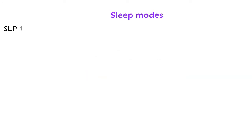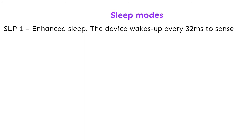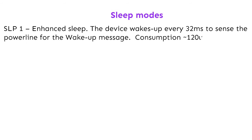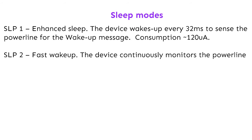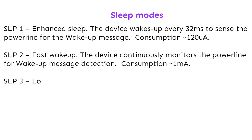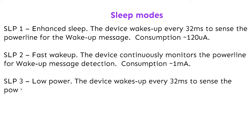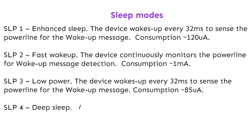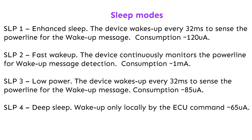The DCAN 500 has 4 sleep modes. Sleep 1, enhanced sleep: the device wakes up every 32 ms to sense the powerline for a wake-up message, consuming approximately 1 mA. Sleep 2, fast wake-up: the device continuously monitors the powerline for wake-up message detection, consuming approximately 1 mA. Sleep 3, low power: the device wakes up every 32 ms to sense the powerline, consuming approximately 85 µA. Sleep 4, deep sleep: wake-up only locally by ECU command, consuming 65 µA.